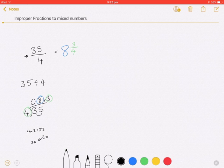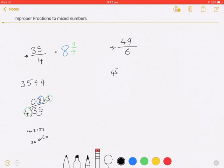Let's do another one. 49, so remember this line means divide. So 49 divided by 6.